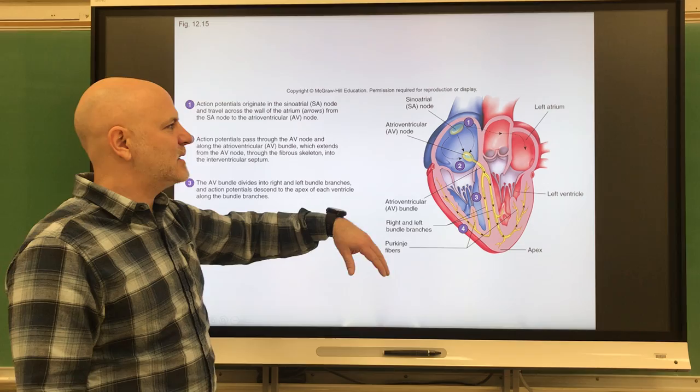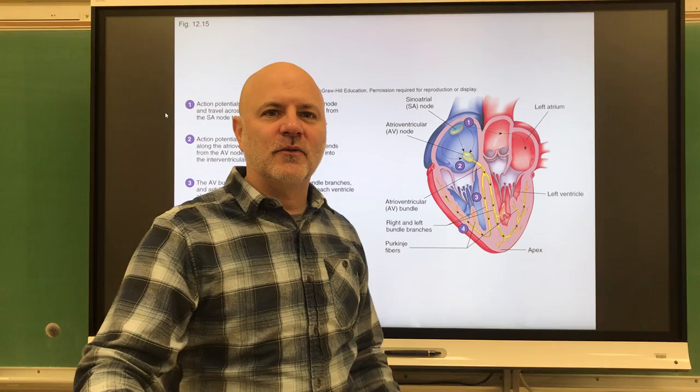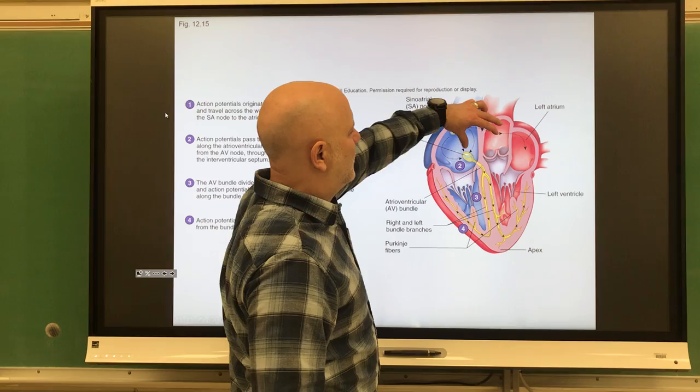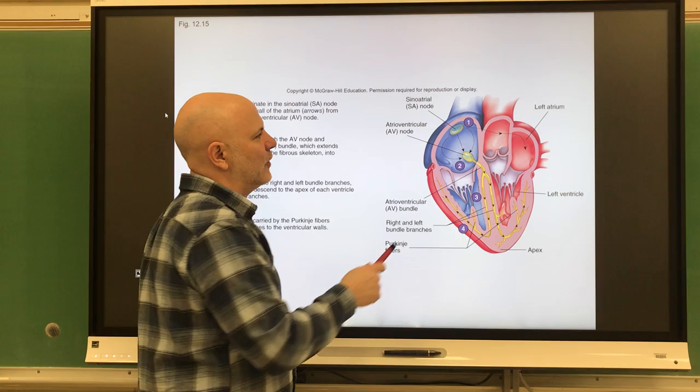The SA node sends out an impulse and contraction to surrounding cells. This impulse and contraction moves from the right atrium to the left atrium, so you'll see this wave of contraction. It works very quickly — if you were actually looking at the heart, it would appear as if the right and left atria were contracting at the same time, pushing blood down into the ventricles.